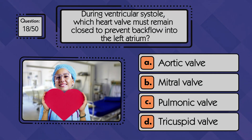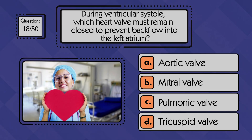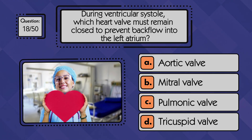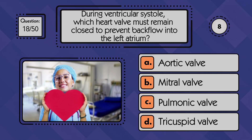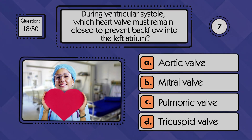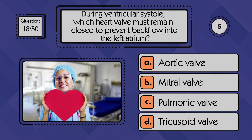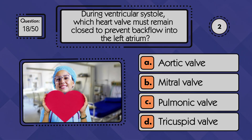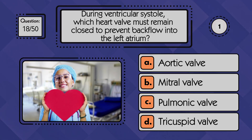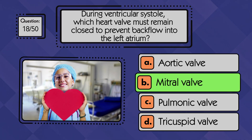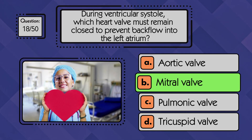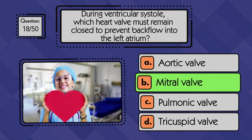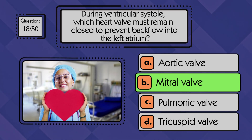During ventricular systole, which heart valve must remain closed to prevent backflow into the left atrium? The mitral valve stays closed during ventricular systole, helping prevent blood from flowing back into the left atrium.